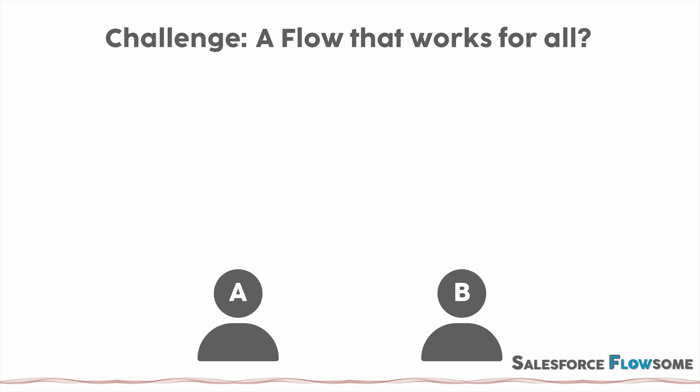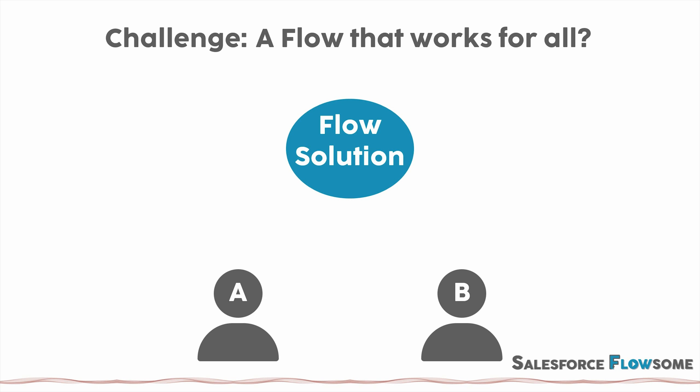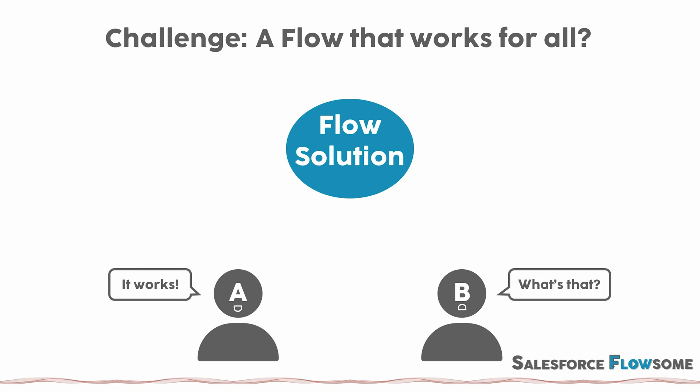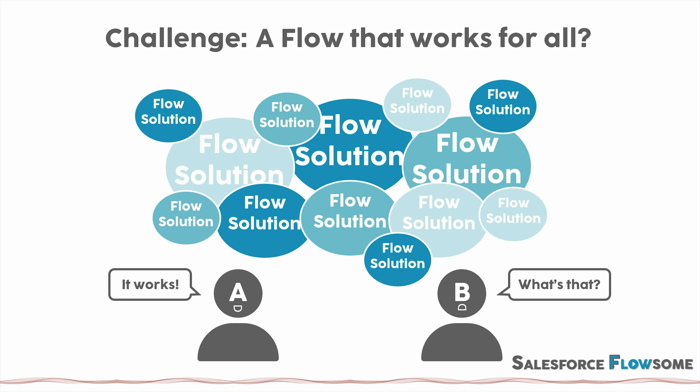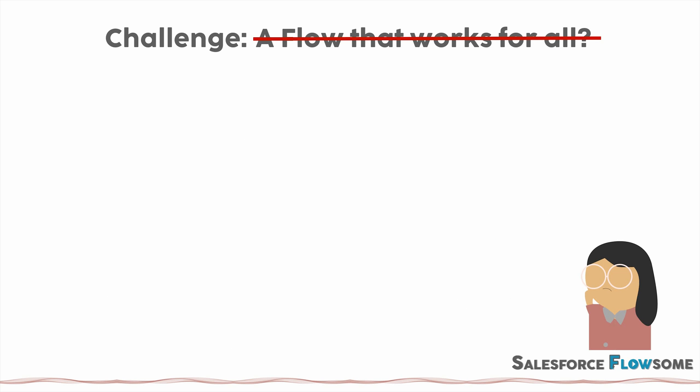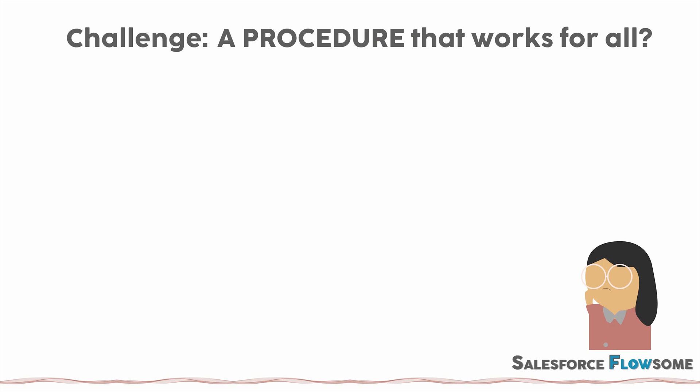To give you some background, one of the most common challenges when teaching flow is that it's really hard to find a good example that applies to everyone. Some solutions work great for me, but they might not mean much to you. So currently, what we can do is to provide as many use cases as possible to help you become more familiar with flow. It's not possible to find that one flow, but is it possible to have a standard procedure that could work for most basic flow solutions no matter what products or objects you're using? I think the answer is yes.